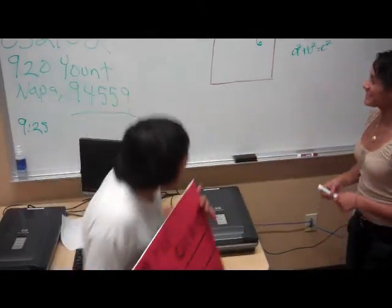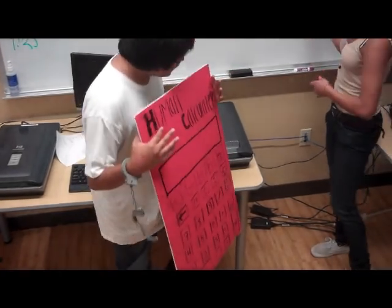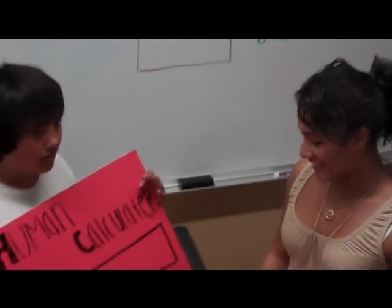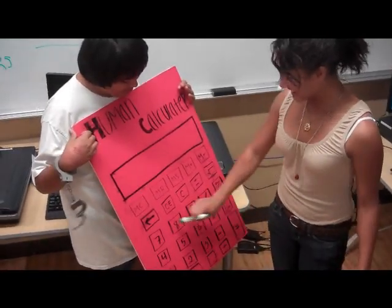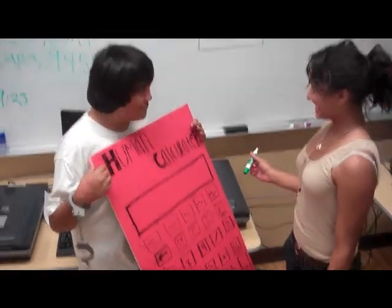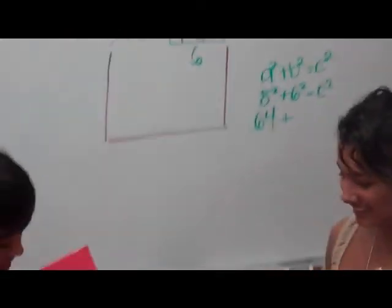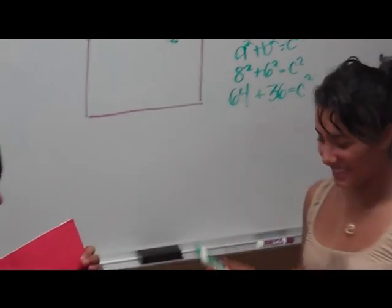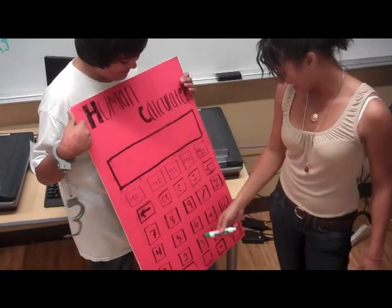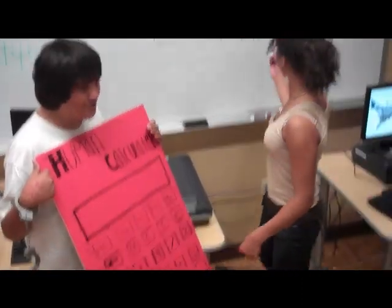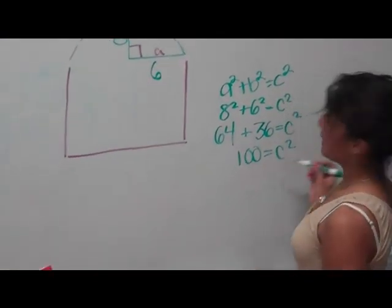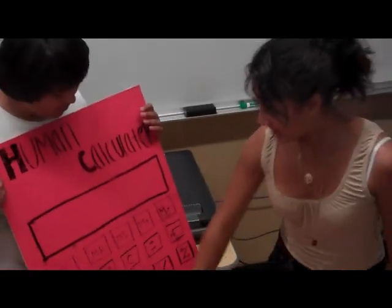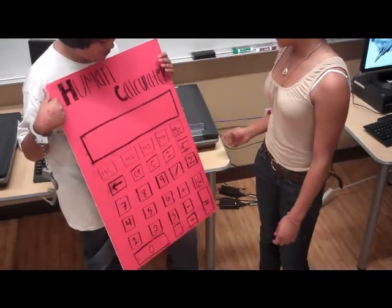Okay, so I'm going to plug in the numbers. 8 times 8 equals 64. 6 times 6 equals 36. 64 plus 36 equals 100. Before I get C, I need to square root 100, which is... the square root of 100 equals 10. So, with the help of my human calculator, C equals 10.